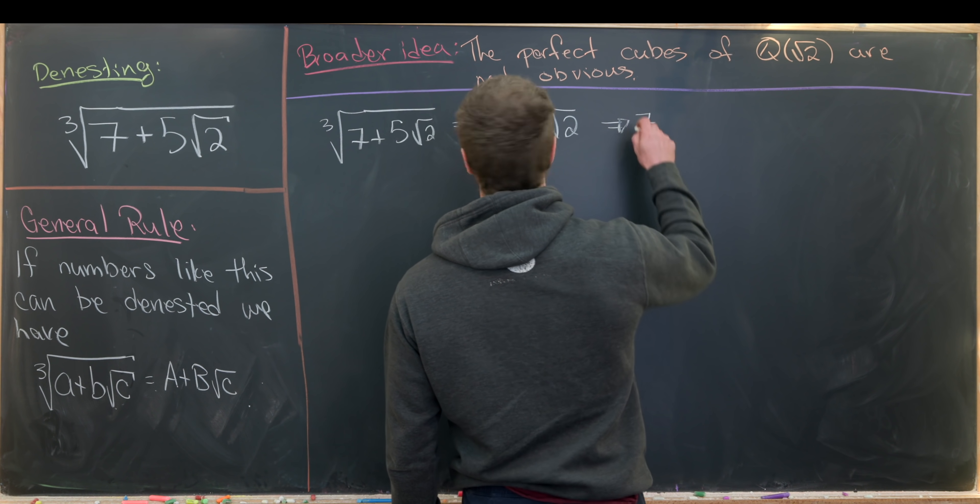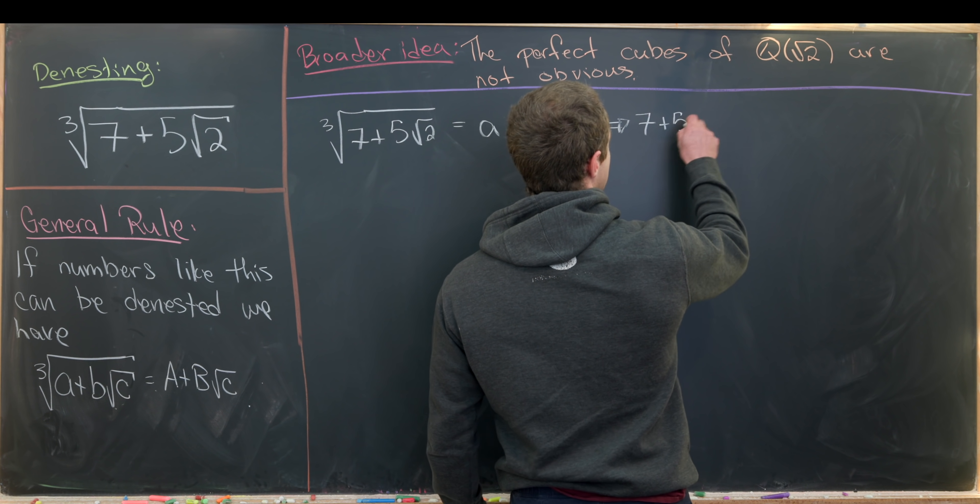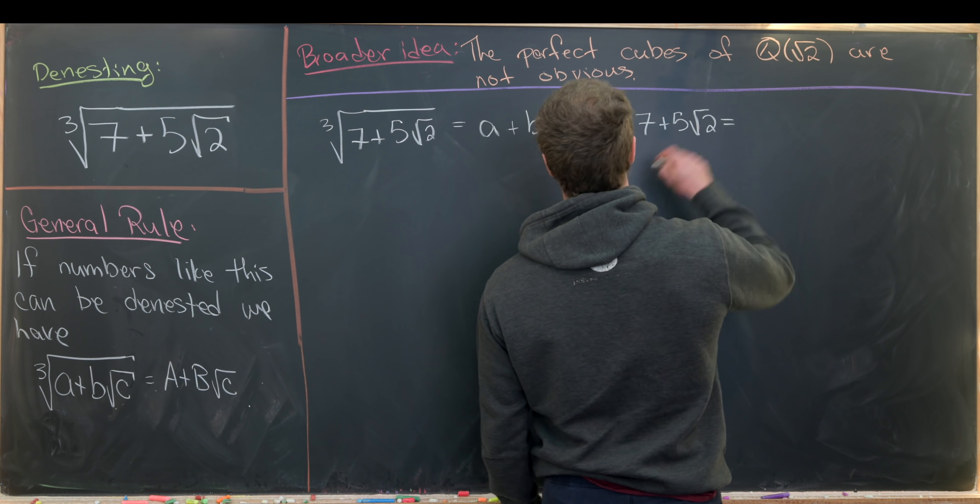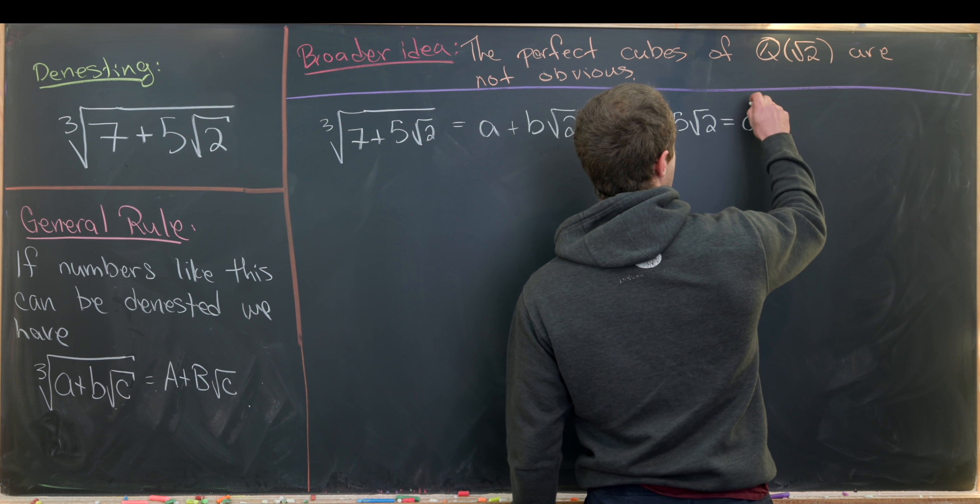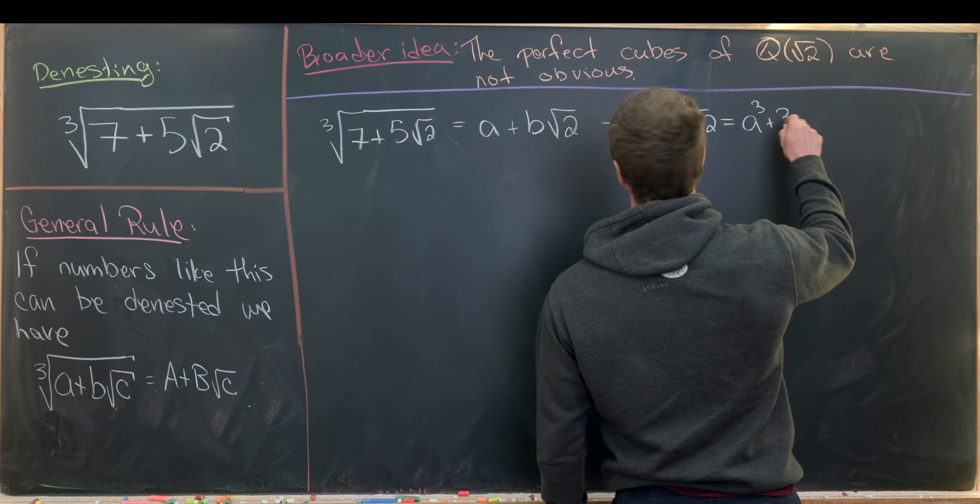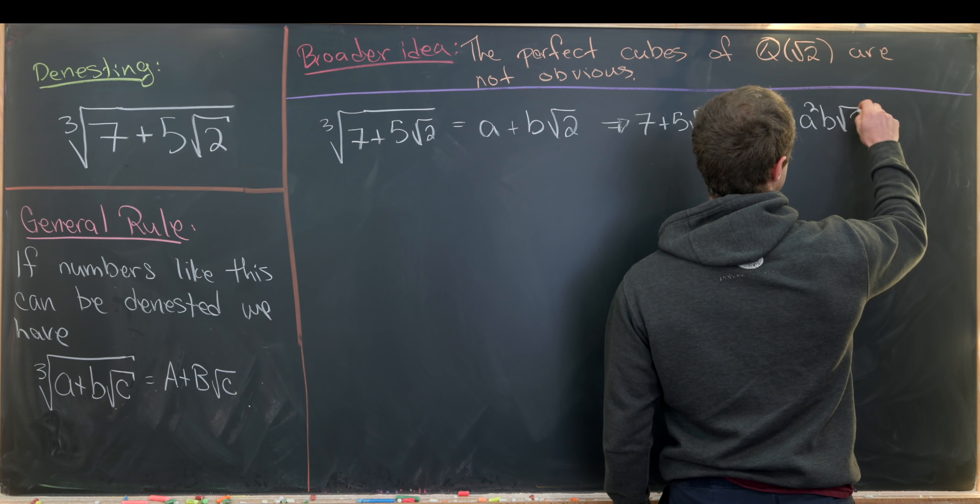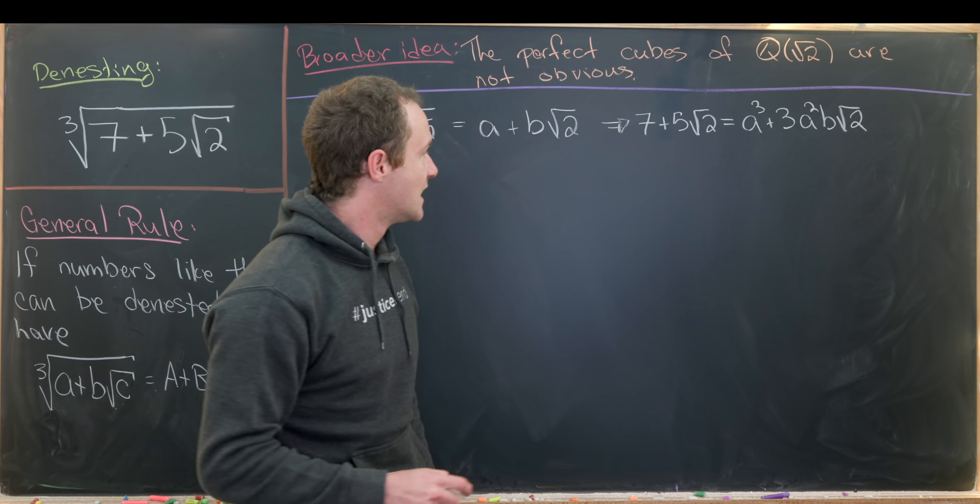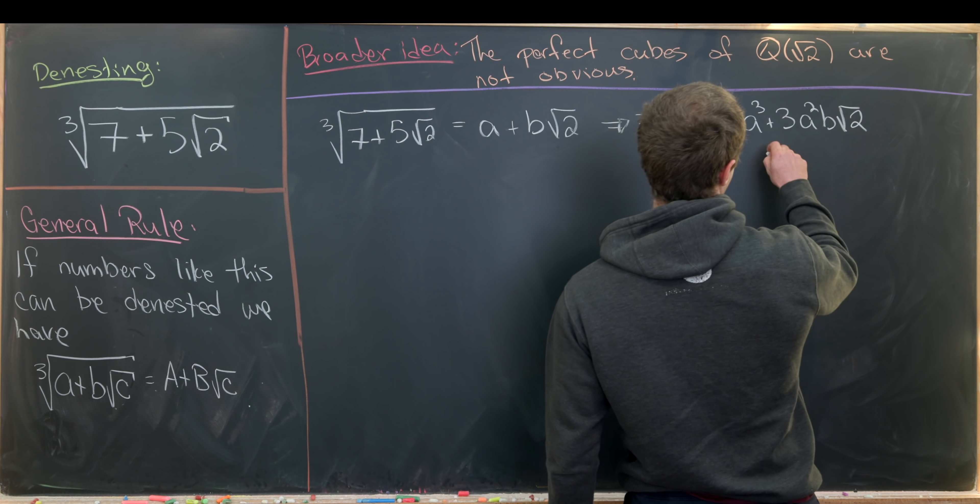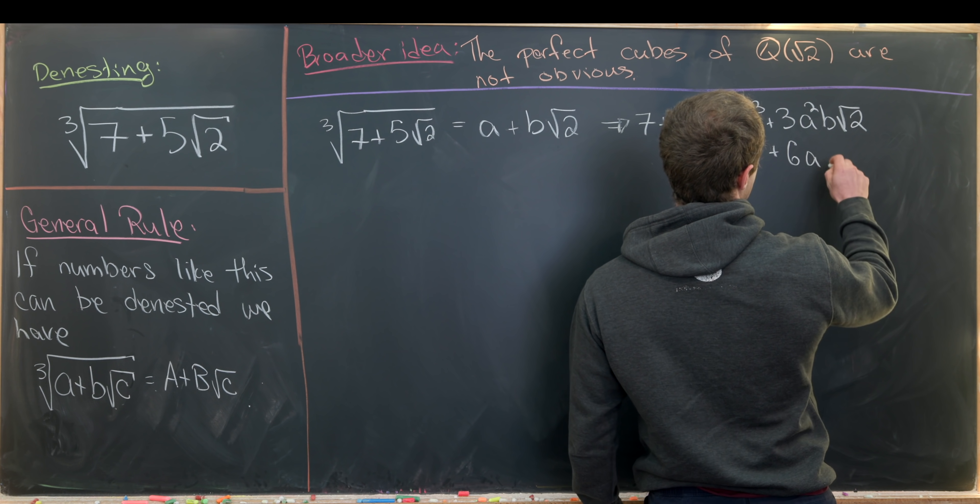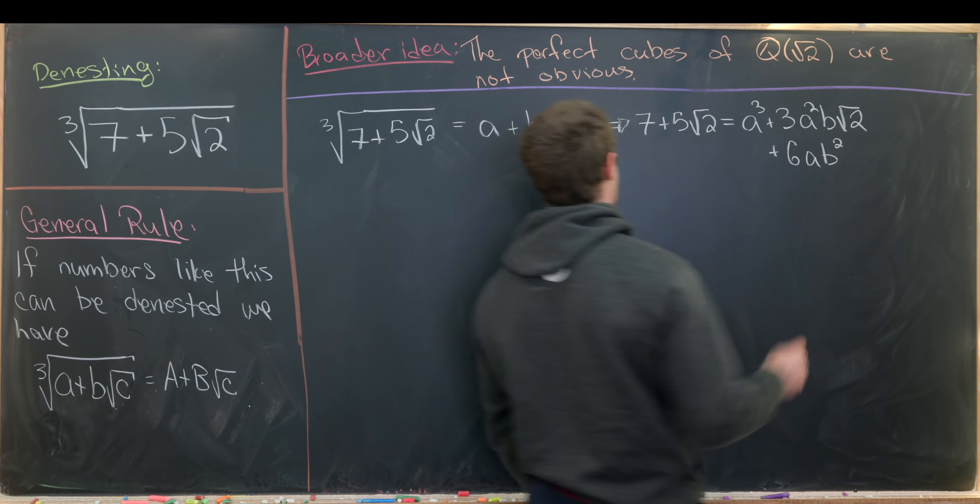Okay so anyway in the end we have seven plus five times the square root of two equals a cubed plus three times a squared times b times the square root of two. And then the next one will be plus six times a times b squared.